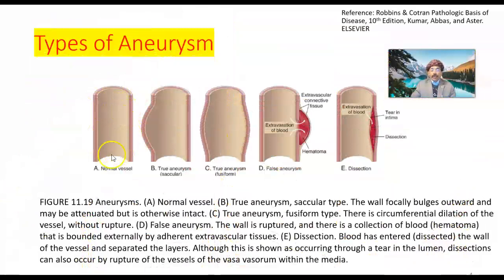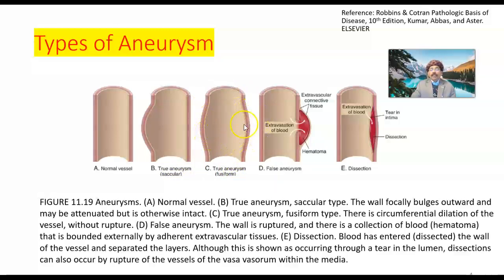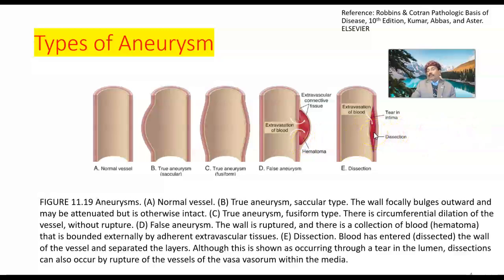Looking at types of aneurysm: a normal blood vessel has three layers — tunica intima, tunica media, and tunica adventitia. A saccular aneurysm shows abnormal dilation on one side. A fusiform true aneurysm involves all layers with dilation on both sides in a circumferential shape. In a false aneurysm, there is a leak with extravascular connective tissue sealing the leakage, forming a hematoma. A dissection separates the tunica media from the tunica intima, or may go inside the tunica media — it may or may not be associated with aneurysm.